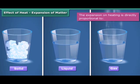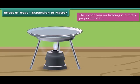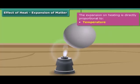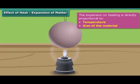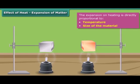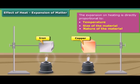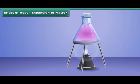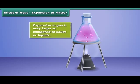The expansion of matter depends on the temperature through which it is heated. When we heat this plate, the higher the temperature, the more is the expansion. Expansion of matter also depends on the size of the material being heated — the longer the plate or bigger the bowl, more is the expansion for the same rise in temperature. The nature of the material also plays an important role; for example, copper expands more than iron for the same rise in temperature. Liquids and gases are fluids, and they expand on heating. Expansion in gas is very large compared to solids or liquids.